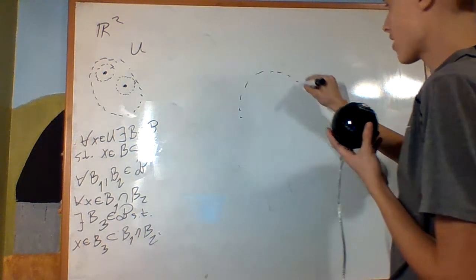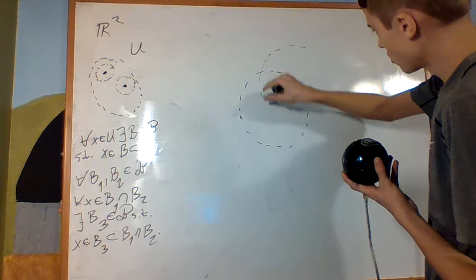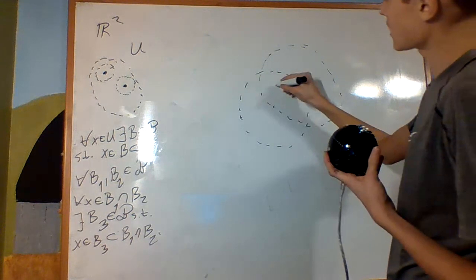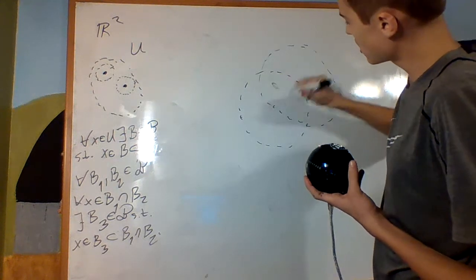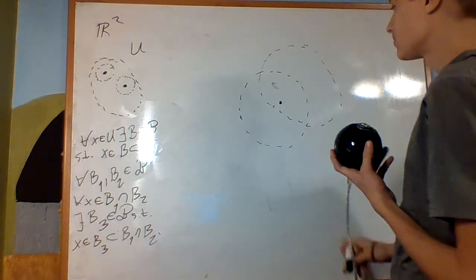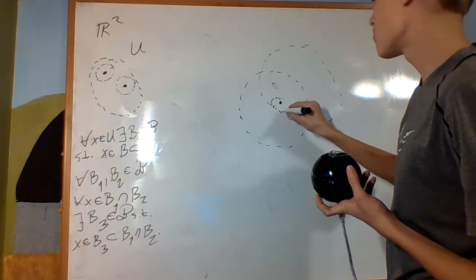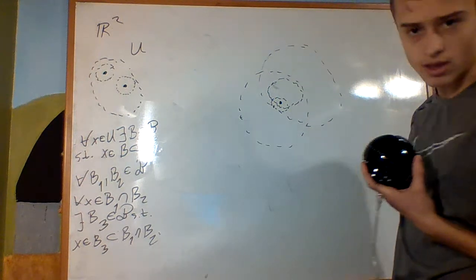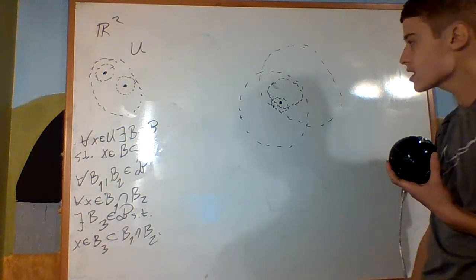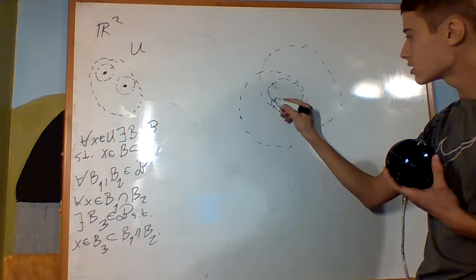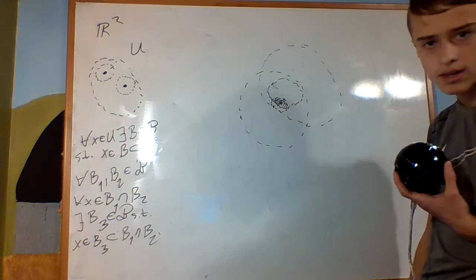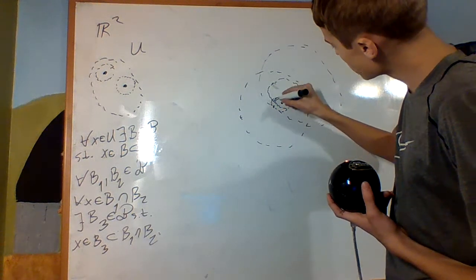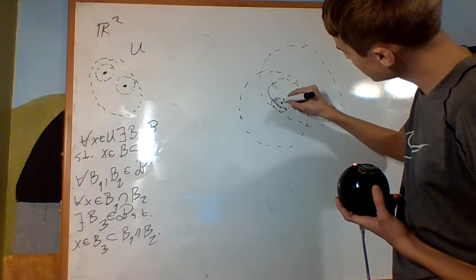What this says is that if I have two open sets and I look at a point in their intersection — say that one right there — and I create two basis elements around it, say those two, and I look at their intersection, there should be another basis element contained inside of that intersection.